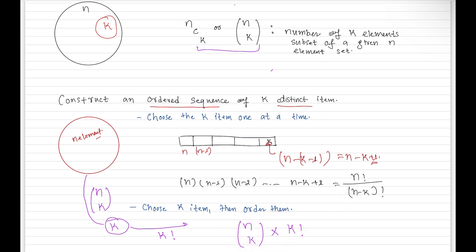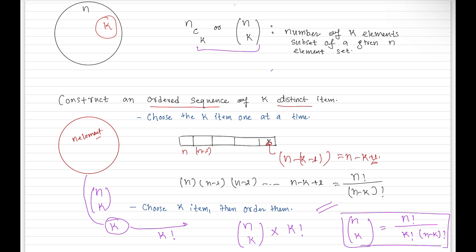We have approached this problem in two different ways and at the end we compare them. From this comparison we find the number of k-element subsets of a given n-element set. Setting the two expressions equal: (n choose k) × k! = n! / (n-k)!, which gives us n choose k = n! divided by k! times (n-k) factorial. We will be doing problems based on this in the next video.